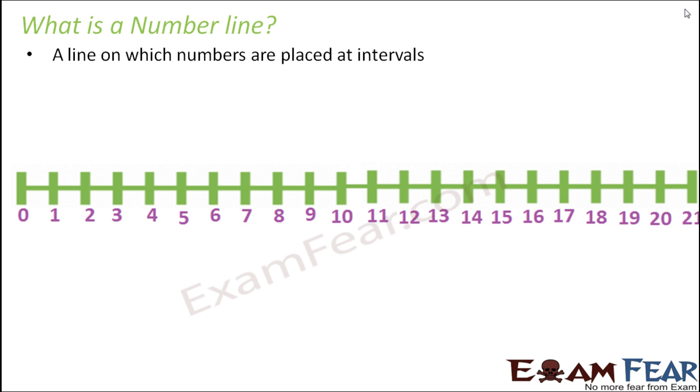A number line is a line on which numbers are placed at intervals. All the numbers, starting from 0, all the whole numbers are placed at equal intervals: 0, 1, 2, 3, 4, 5 and so on. So this line is called a number line.